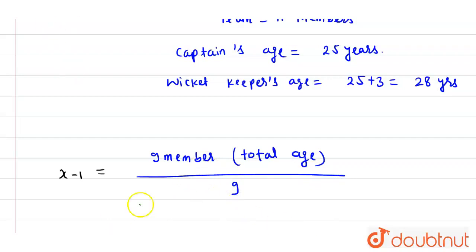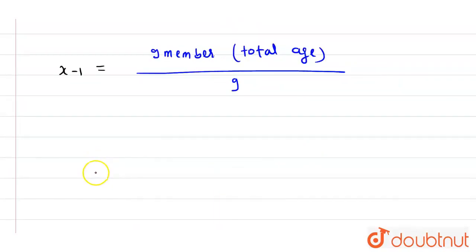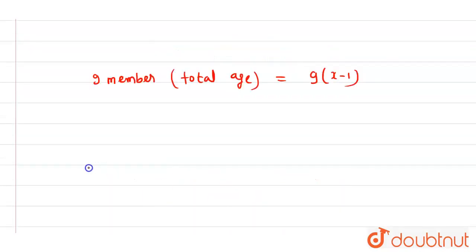The total age equals 9 into x minus 1. Now for the total team, 11 members' average age equals x.